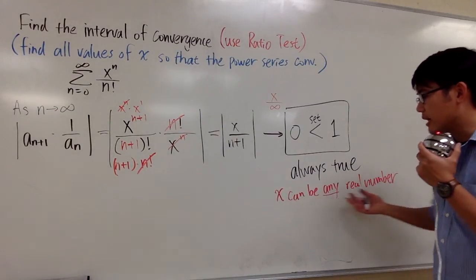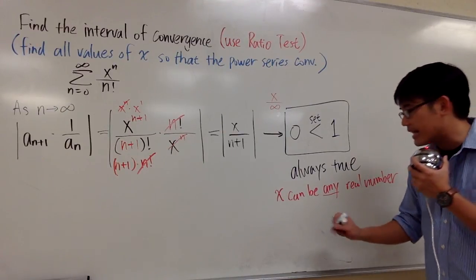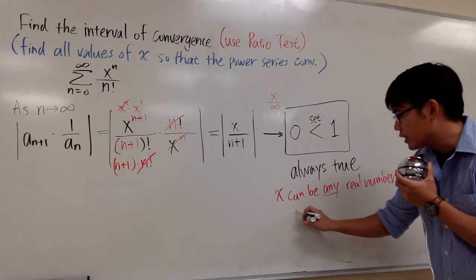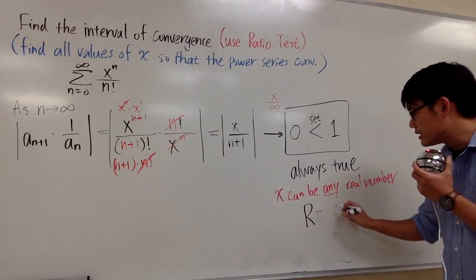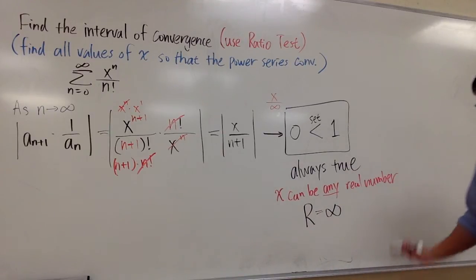And if you know that x can be any real number, we can say that the radius of convergence, so I'll put on capital R, the radius of convergence, this is infinity. Okay?